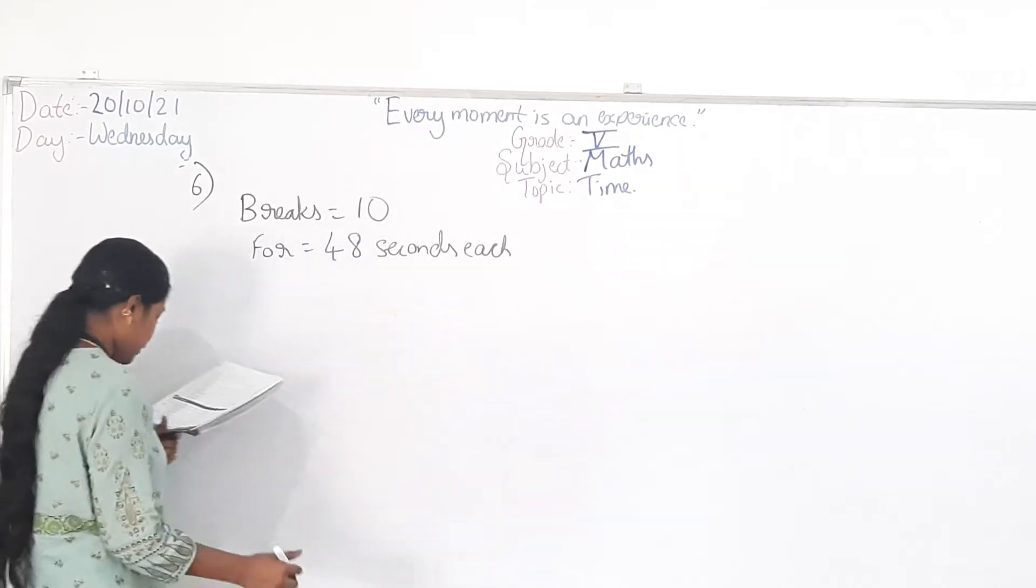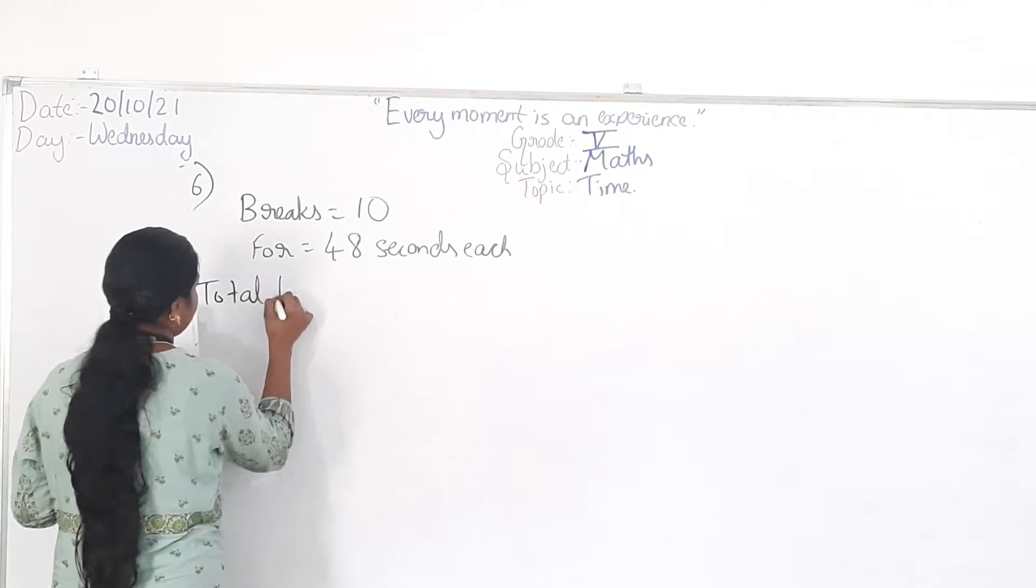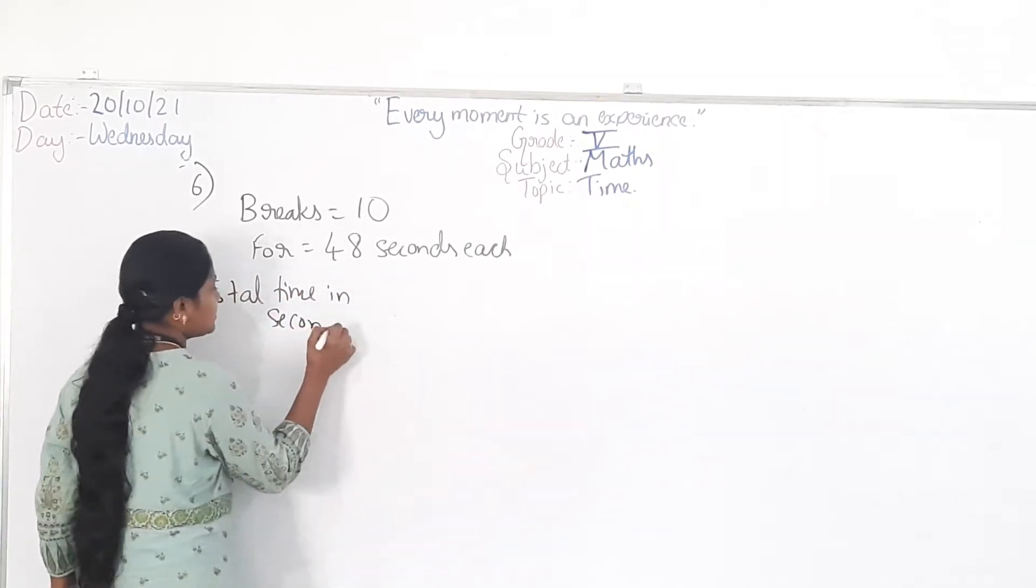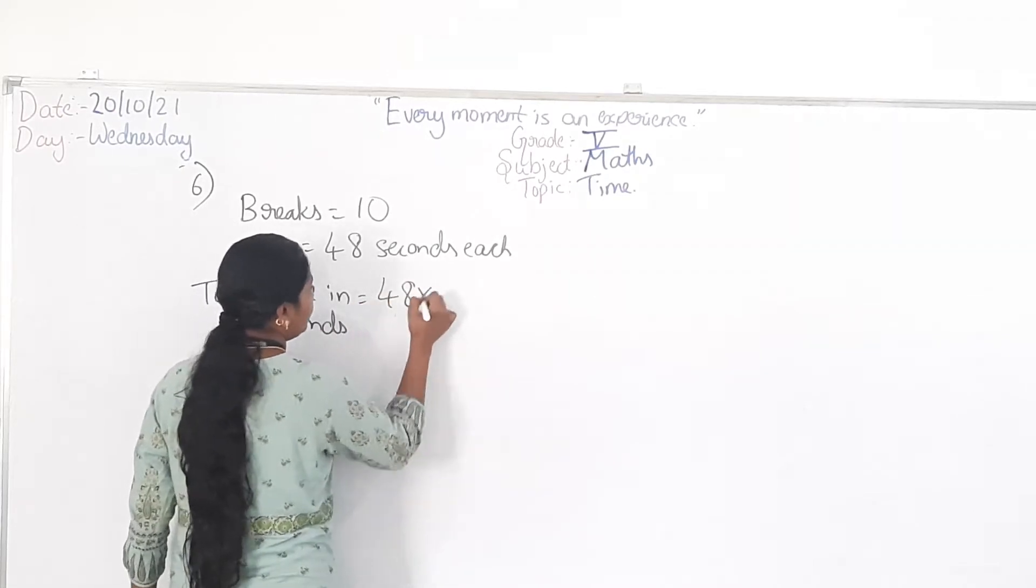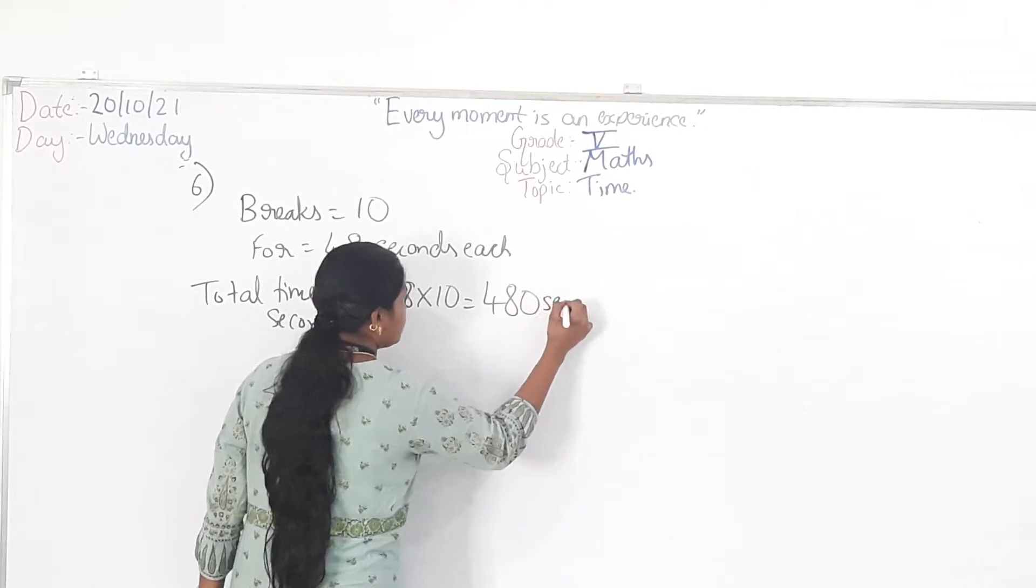So the question is you have to find out how many minutes did the breaks last. So that is total time in seconds. First calculate the total time in seconds. That is 48 into 10 equals 480 seconds.